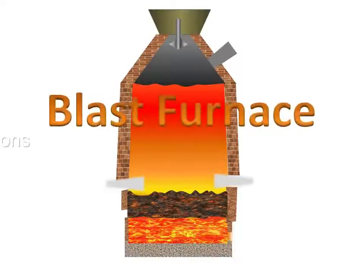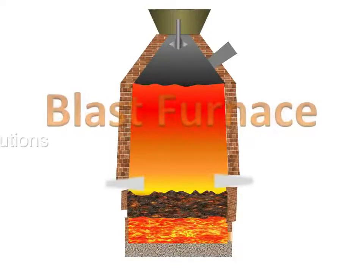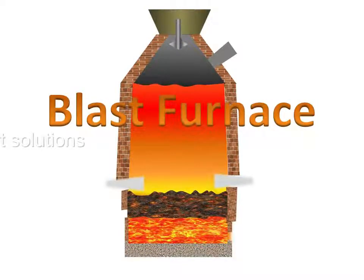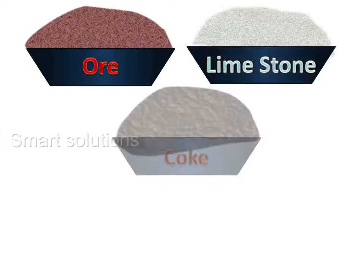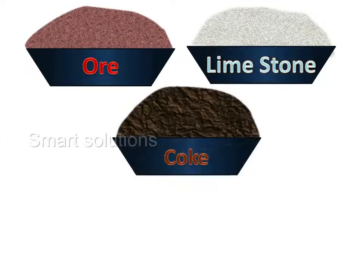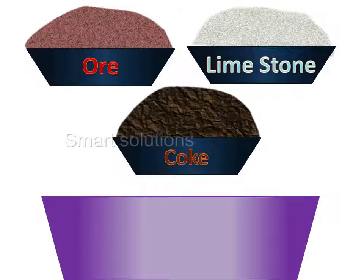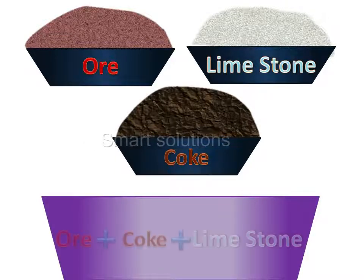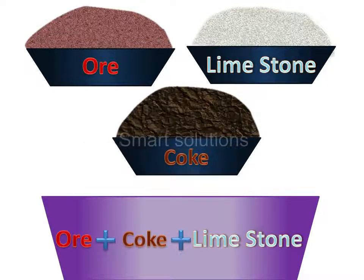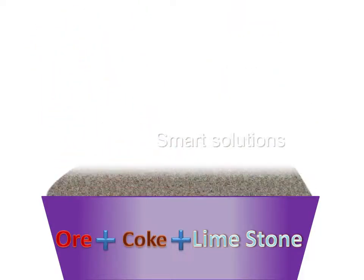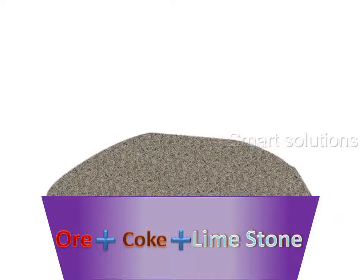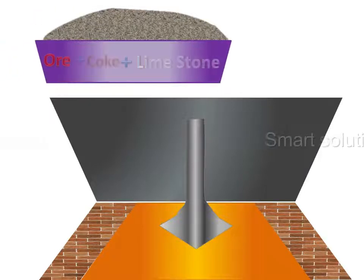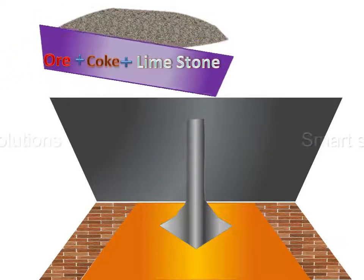In the blast furnace, after concentration of oxide ores of iron, the ore is mixed with limestone and coke. This mixture is then fed into the blast furnace from its top.